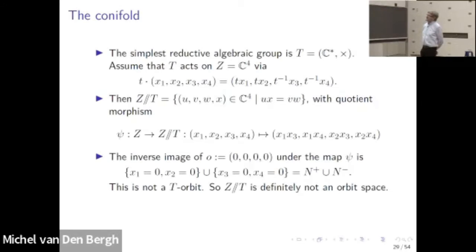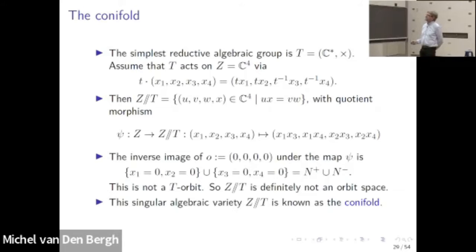This quotient is known to physicists as a conifold. In some sense it's the singularity of the quotient — it's not a finite quotient singularity, but in some sense it's the simplest possible singularity of that kind.